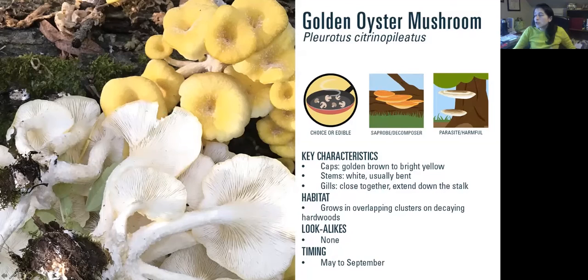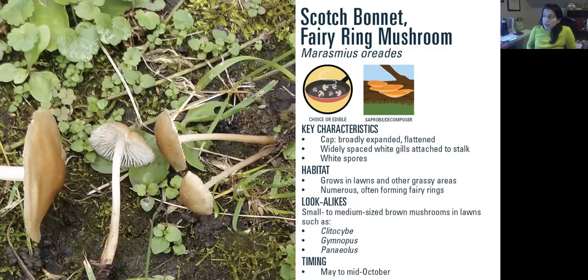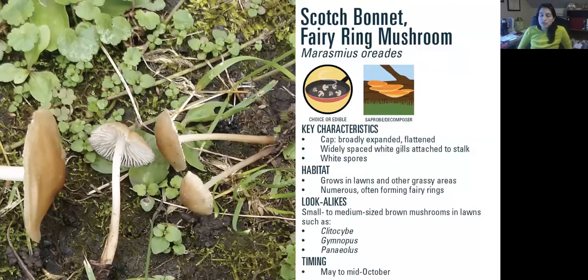The scotch bonnet or fairy ring mushroom, Marasmius oreades, is a choice edible. The cap is broadly expanded and flattened, with widely spaced white gills attached to the stalk. The spore print is white. It grows in lawns and other grassy areas and can form fairy rings. There are a lot of lookalikes, which may make it difficult to identify correctly — if you're not sure, just don't eat it. It becomes active from May to mid-October.